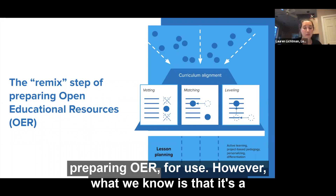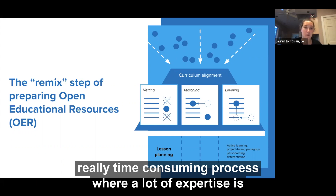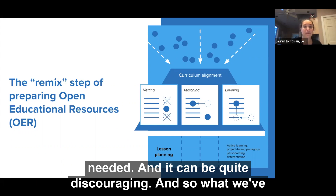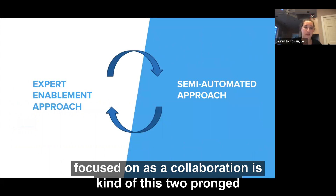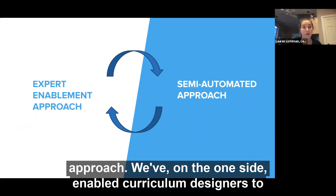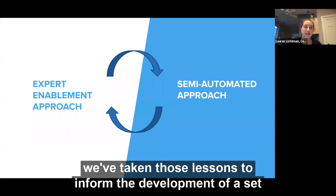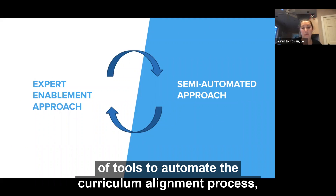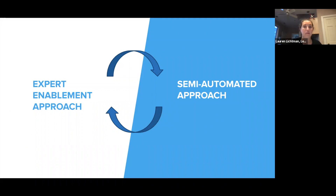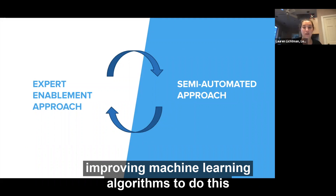However, what we know is that it's a really time-consuming process where a lot of expertise is needed and it can be quite discouraging. So what we've focused on as a collaboration is a two-pronged approach. On one side, we've enabled curriculum designers to manually align OERs to national curricula. Then we've taken those lessons to inform the development of tools to automate the curriculum alignment process, improving machine learning algorithms to do this specifically.